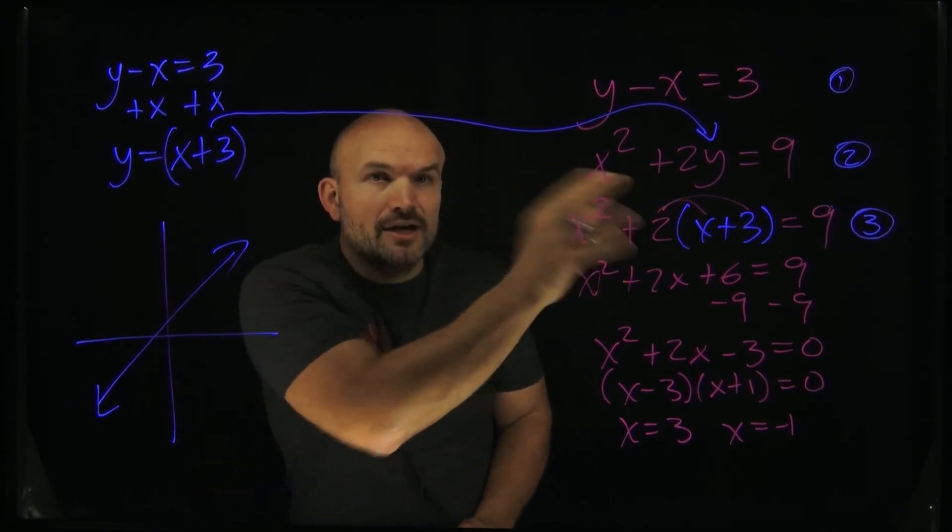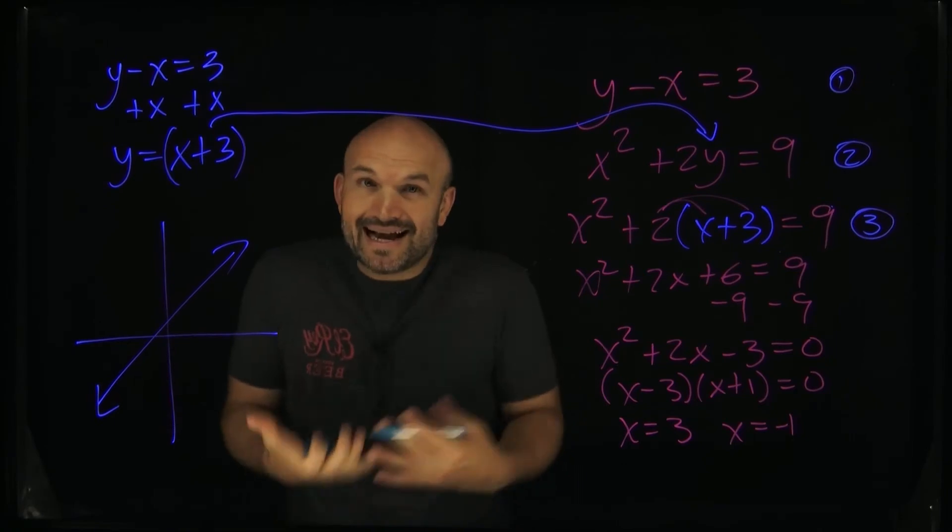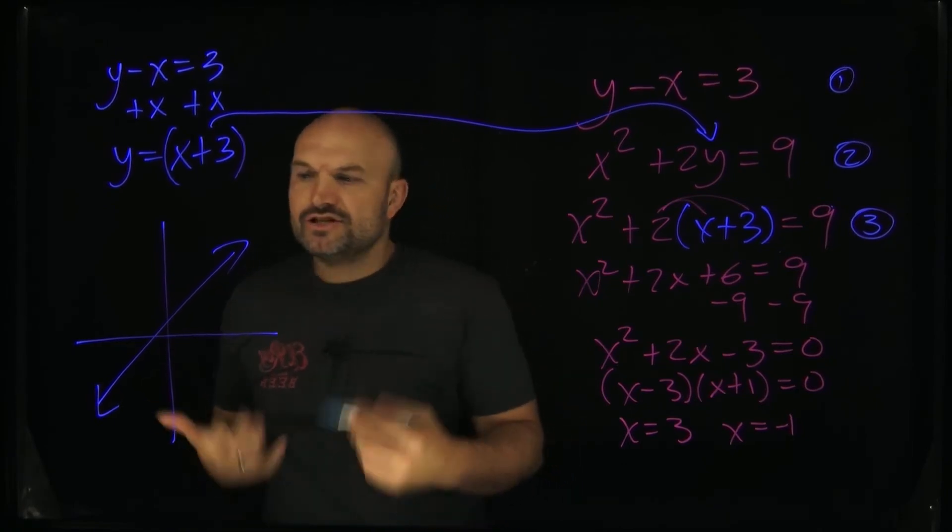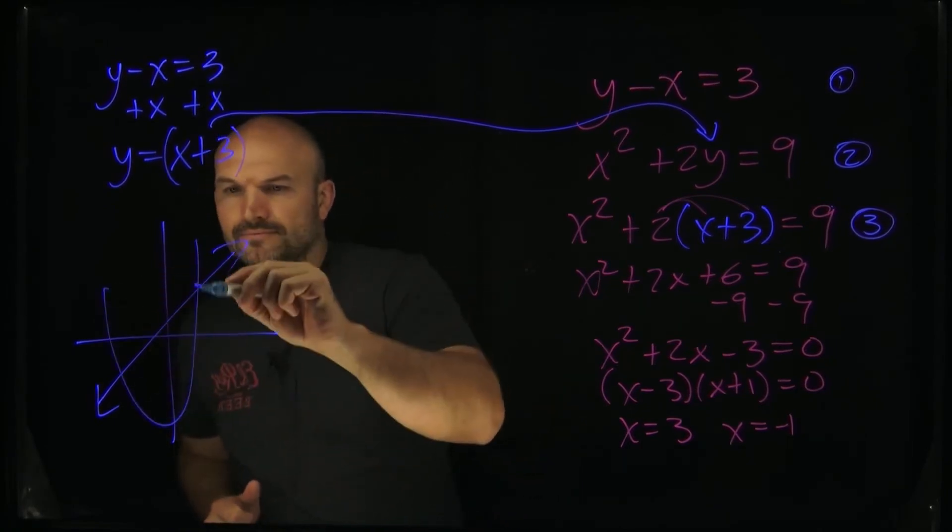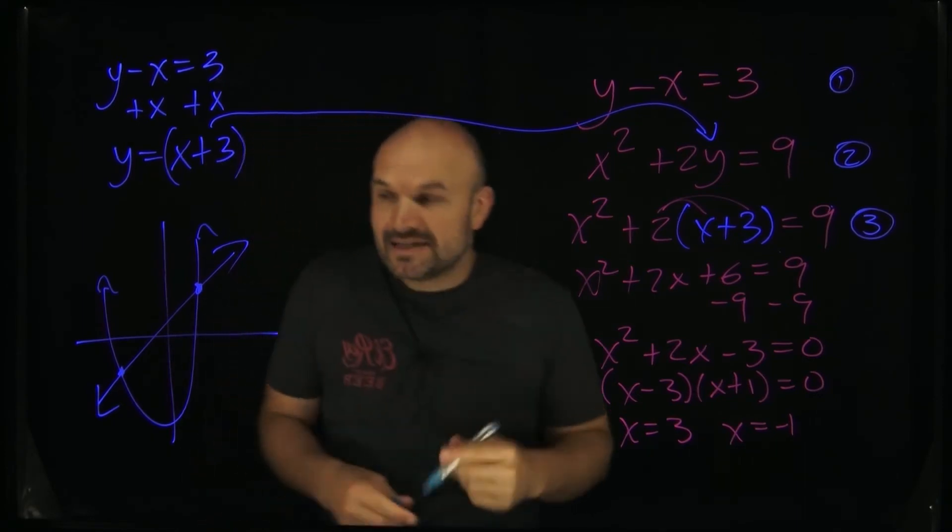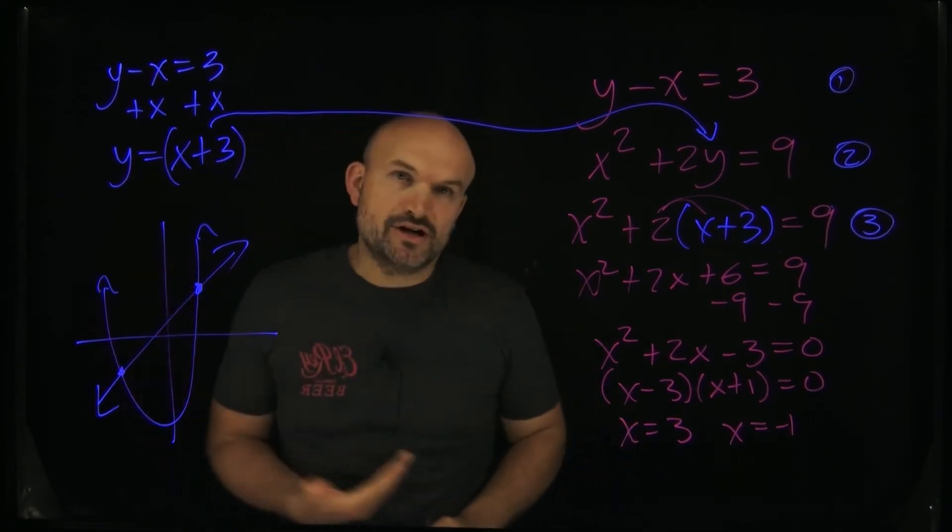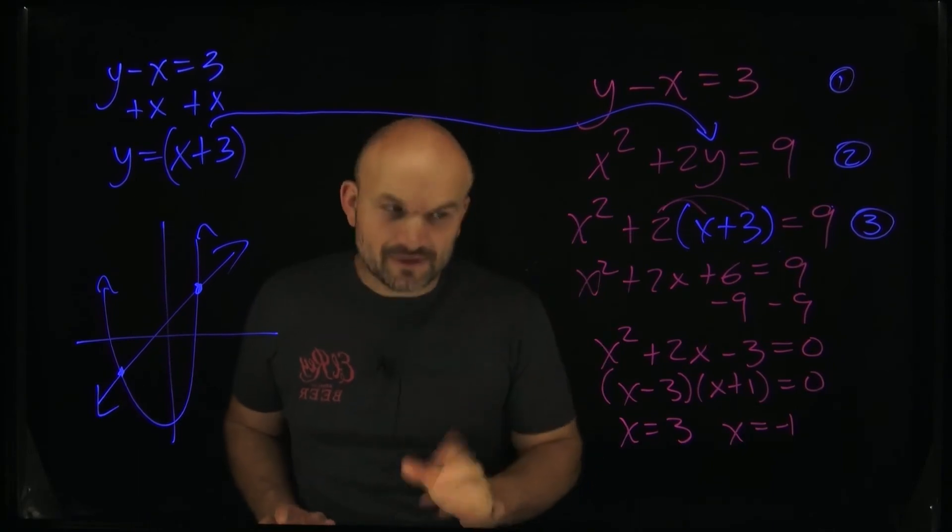If you were to solve for y here, you would have some sort of quadratic. Now again, I don't know what this quadratic looks like, but let's just kind of write a hypothetical. Now, is it possible that actually the quadratic and the linear equation could not intersect and we'd have no solution? Absolutely.